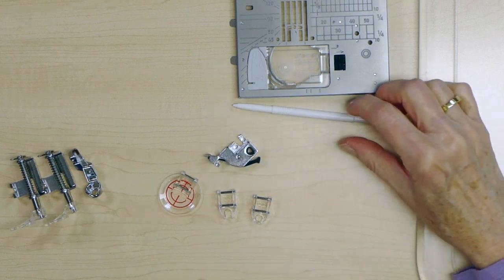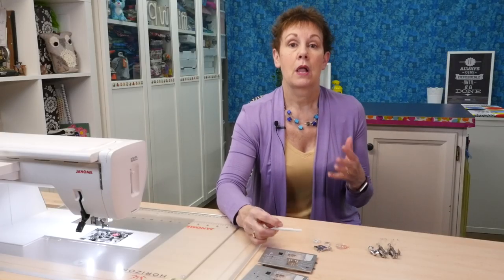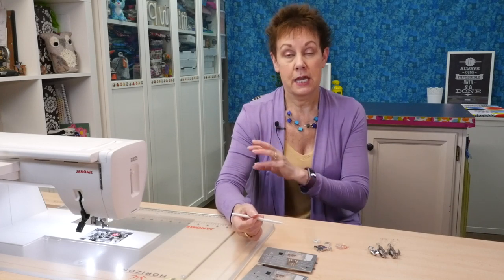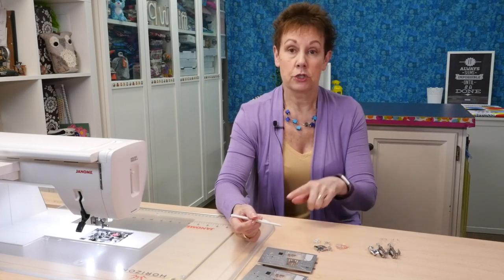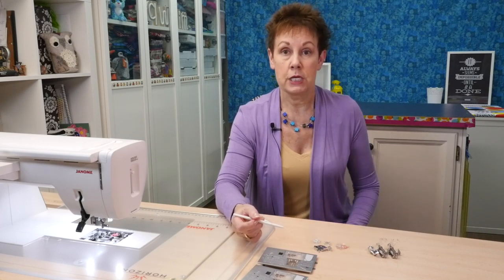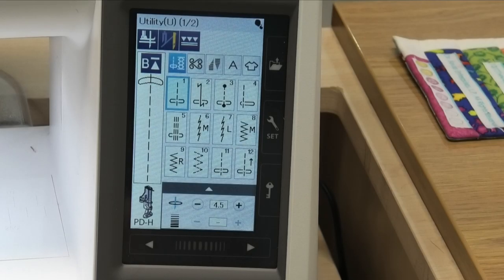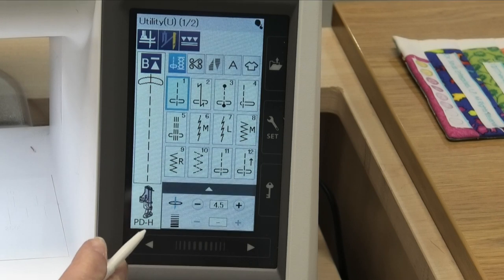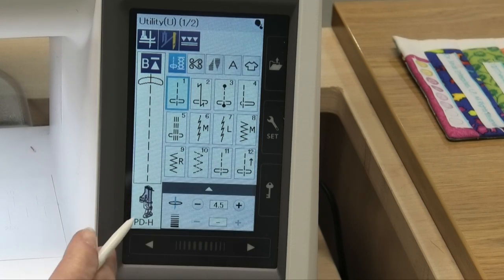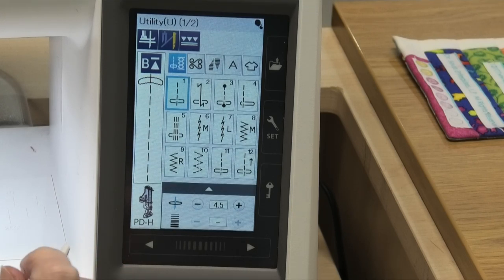Okay so now that you know about the various feet you want to know what are the settings on the machine that you should be using to work with all these feet. So we're going to go to the machine next and I'm going to show you that. So I want to show you what settings you need to use on your machine when you're doing free motion quilting. But before we get into that if you don't know how to set up your machine for free motion quilting I'll put a link in the description below to a video that talks about how to do that.